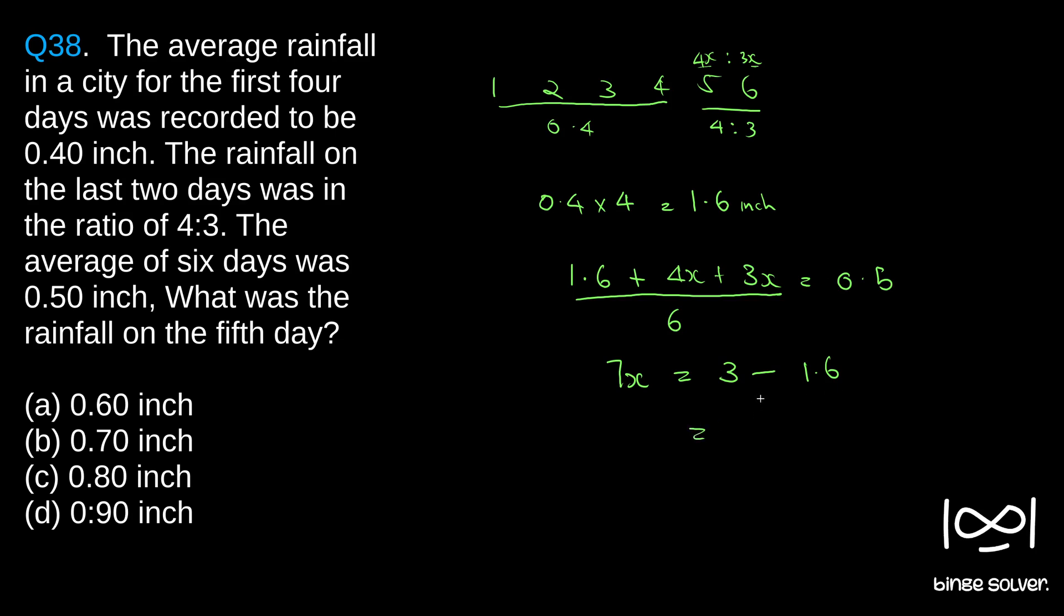Sorry, 3 minus 1.6, that is 1.4. And x is 1.4 by 7, that is 0.2. So we get x as 0.2.